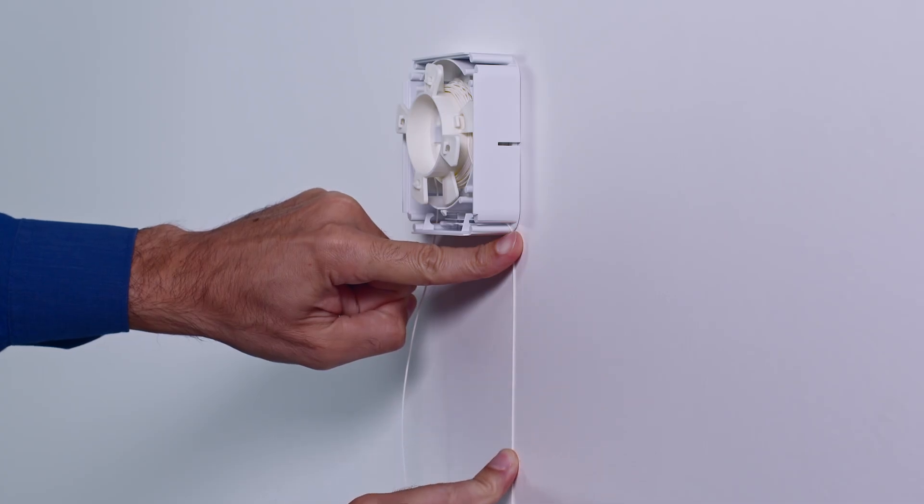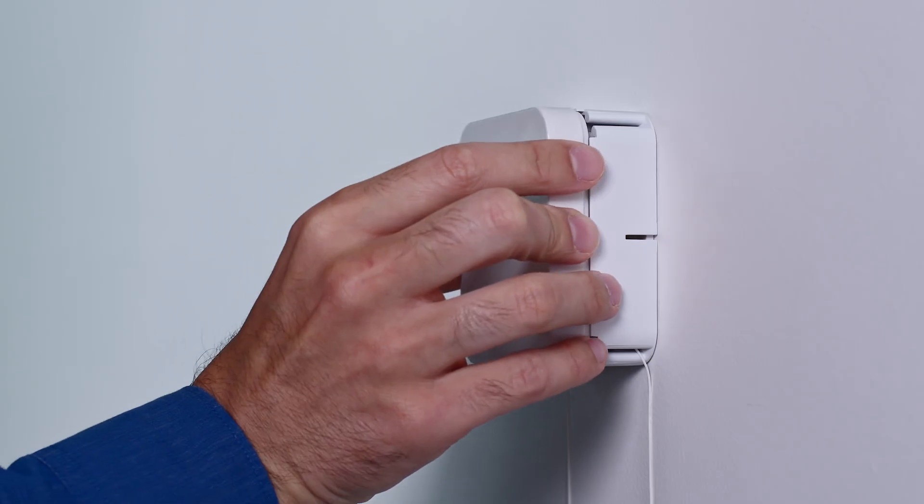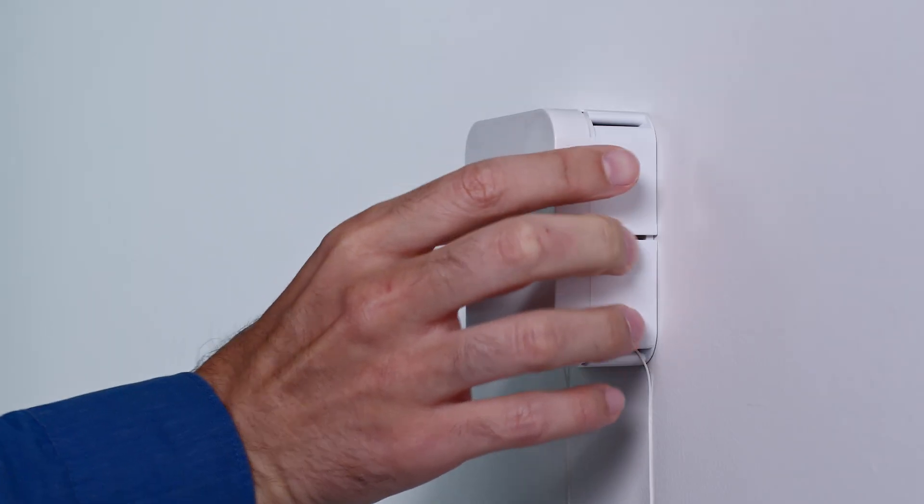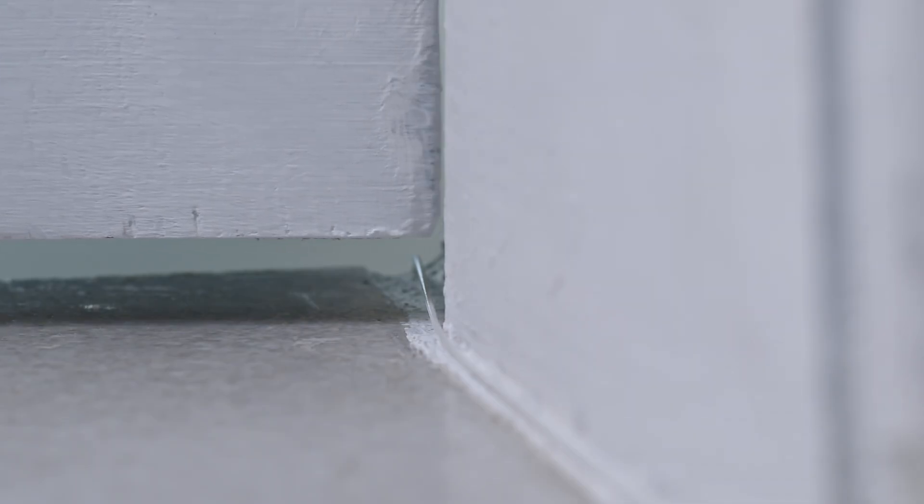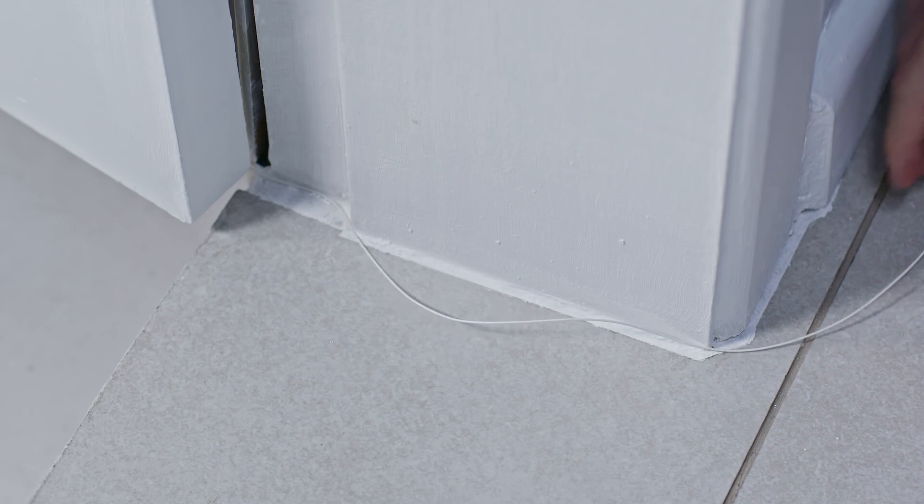Press the cord into the adhesive through the length of the run, leaving a small amount of the fiber unadhered at the ends to enable plugging into the media converters. If routing through a doorway, it is recommended to use the bottom of the door frame to reduce the risk of damage to the fiber. Before adhering, ensure the door does not pinch or rub the fiber when closed.